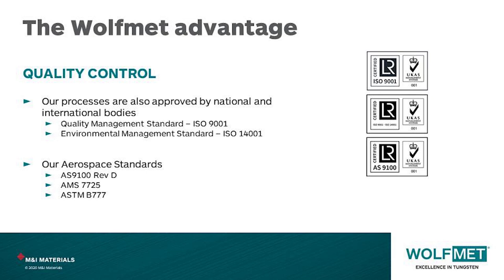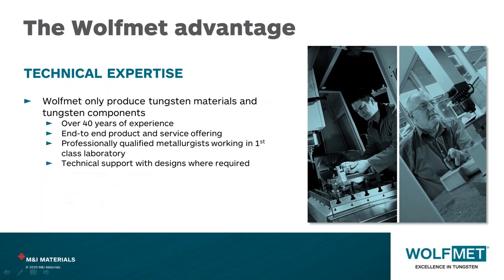M&I Materials is also accredited to ISO 14001 for environmental management and holds a Queen's Award for Enterprise for International Trade. Wolfmet only produces tungsten materials and components — we are truly a specialist manufacturer with no distractions, for well over 40 years. We have qualified metallurgists working in a first-class laboratory and provide technical support and design-for-manufacture advice. We offer a powder-to-parts end-to-end service with complete control over all aspects of alloy and component production: product quality, lead times, service, and cost. We're control freaks.